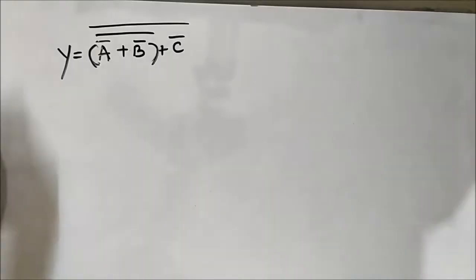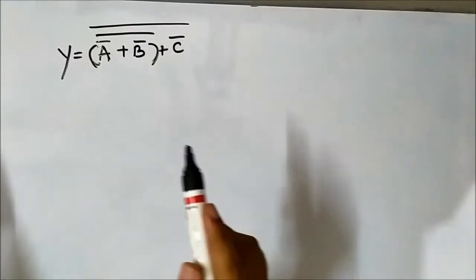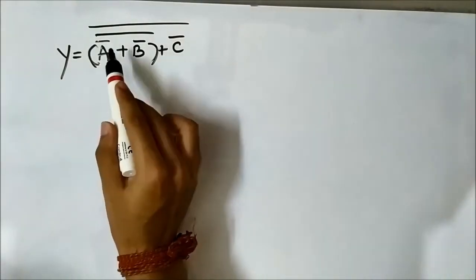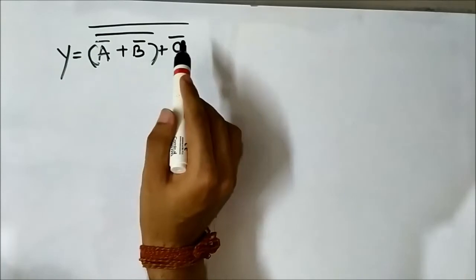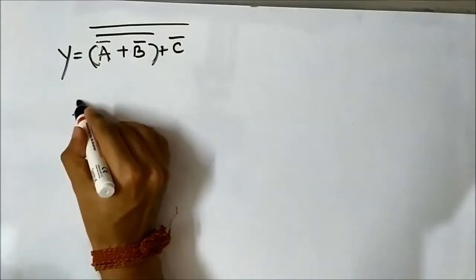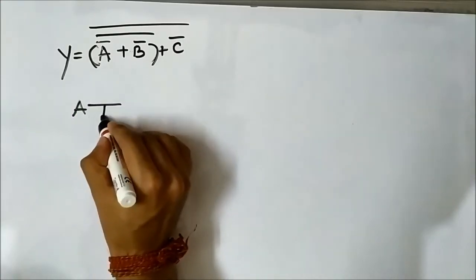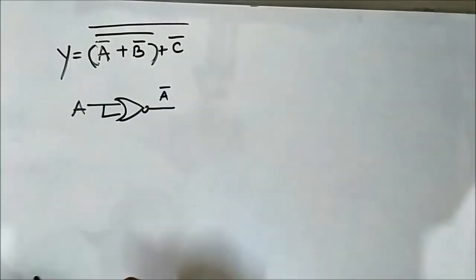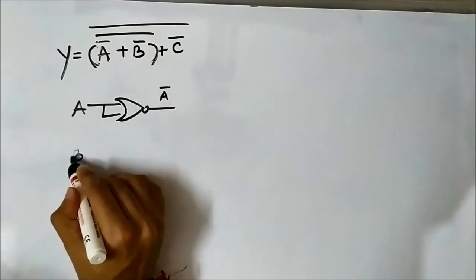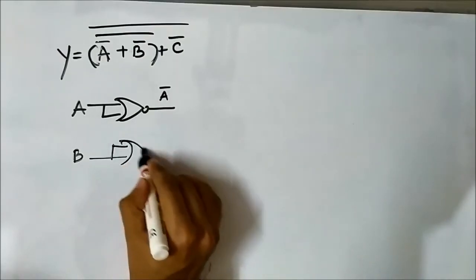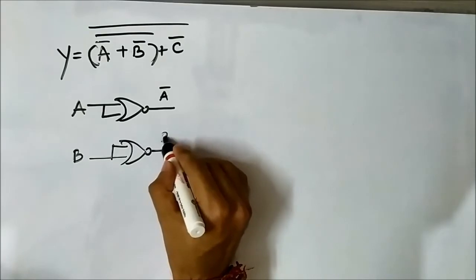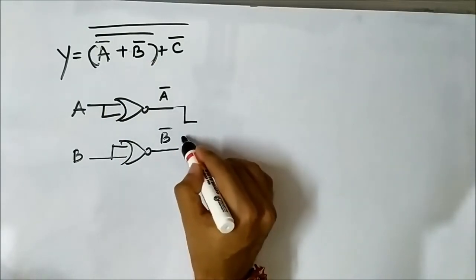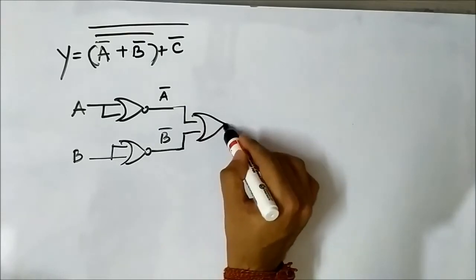Now we'll implement this modified boolean expression using NOR gates. First, we have to get A complement, B complement, and C complement separately. Signal A is passed through a NOR gate with both inputs tied together to get A complement. Similarly, signal B is passed through a NOR gate to get B complement. Then A complement and B complement are given to another NOR gate.